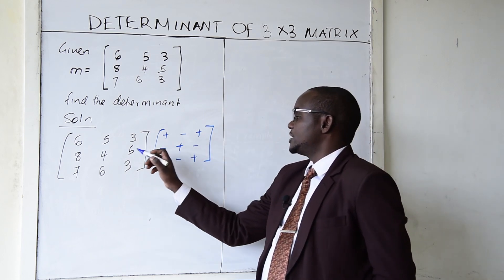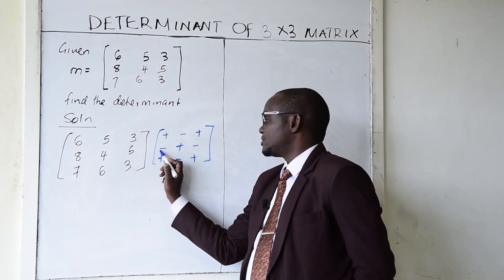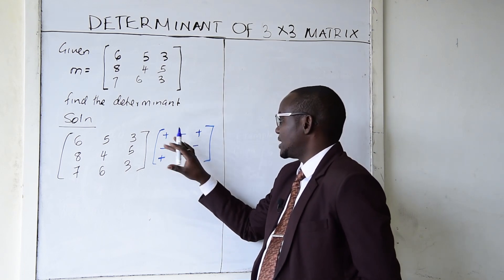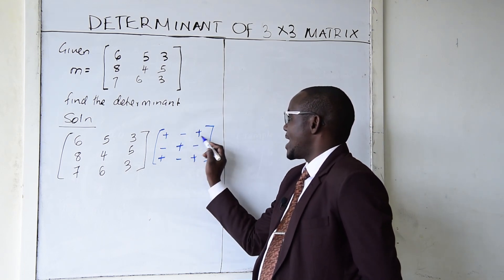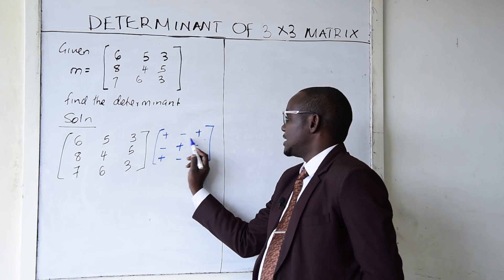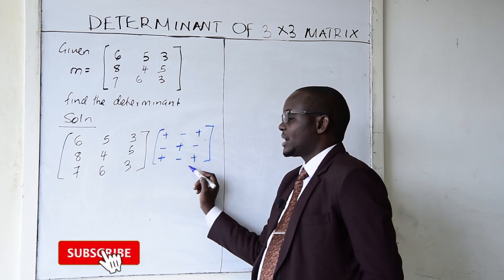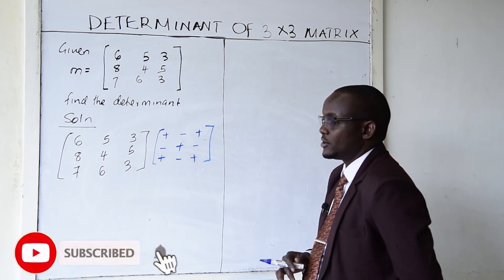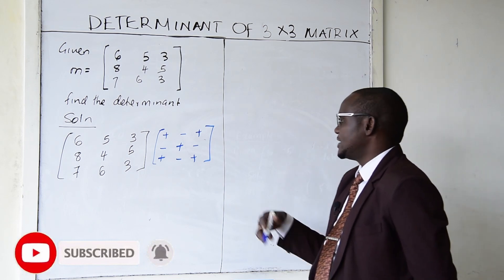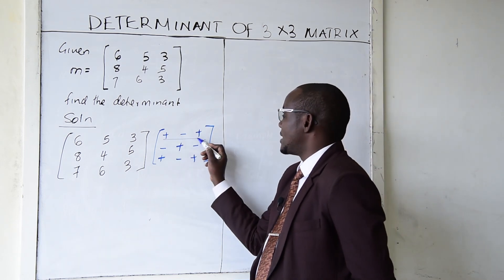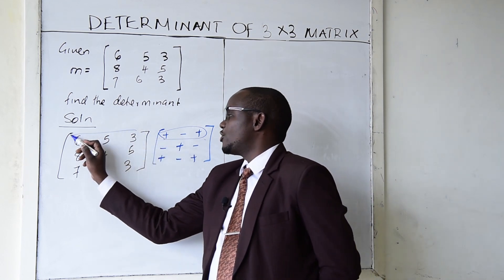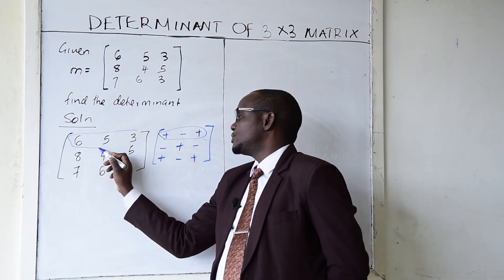We can use any of the rows — row 1, row 2, or row 3 — to calculate the determinant. I'll decide to use row 1 to calculate my determinant.